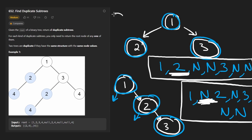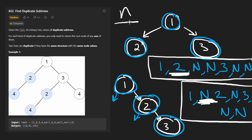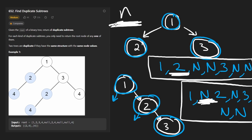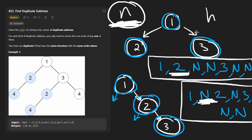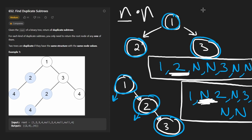Before we code it up, let's quickly go over the time complexity. For every subtree we build a serialization — the length of that serialization could be N, where N is the size of the entire input tree. Even checking if a string exists in a hash map is not O(1), because the string has to be hashed. So we have N trees, and for each we build and hash a string of length N — that's O(N) per tree — giving us O(N²) overall time complexity.